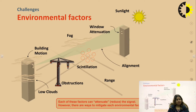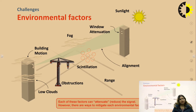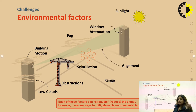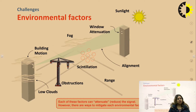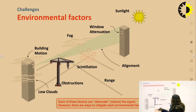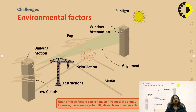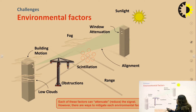Since FSO deals with free space, there are many environmental factors that affect the light reaching the receiver end. These include different environmental challenges like fog, window attenuation, scintillation, obstructions, building obstructions, alignment issues, and varying sunlight conditions — all of which can affect the light propagating from the transmitter to the receiver end.